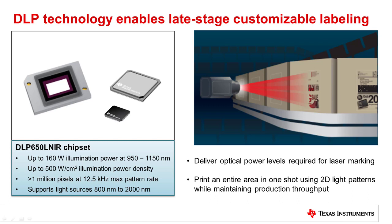The DLP-650 LNIR chip supports up to 160 watts of optical power in the 950 to 1150 nanometer spectrum, and optical power densities up to 500 watts per centimeter squared.